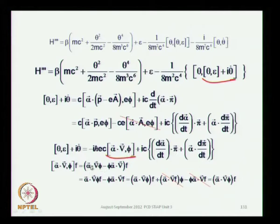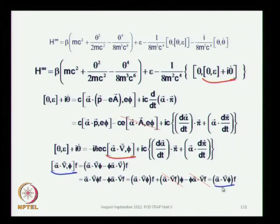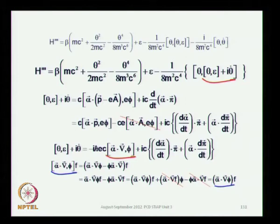This commutator is α·∇φ − φ·(α·∇) operating on f. Following the same reasoning as earlier, you see that these two terms cancel and you are left with only α·∇φ. That is what you have from this commutator: two terms reduce to a single equivalent operator α·∇φ. We will use this and simplify the relation for the combination of these two terms.